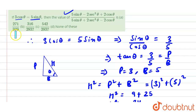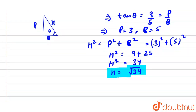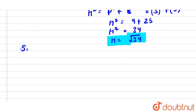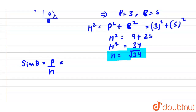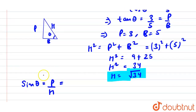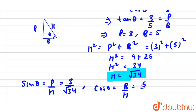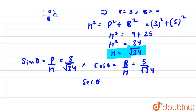Now we can find the trigonometric values. sinθ = p/h = 3/√34. Similarly, cosθ = b/h = 5/√34. And secθ = h/b = √34/5.